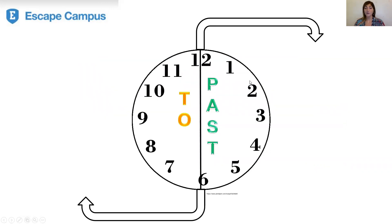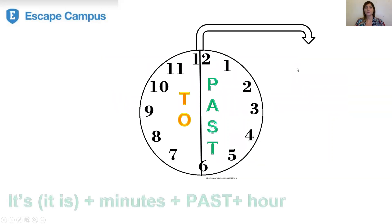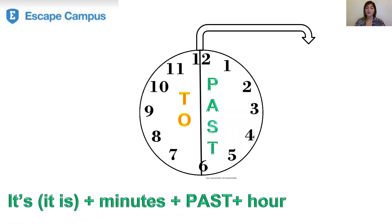To tell the time, we have to divide our clock into two parts. If we are on the right side of the clock — from number 12 to number six — we use past. We say: it's plus the minutes plus past plus the hour. To tell the time, we always say first the minutes, then we use past, and then we say the hour.